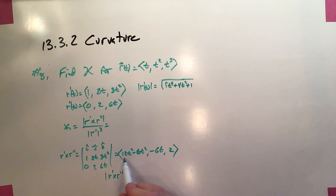Again, the first term is just 6t squared. So that's going to be 36t to the fourth. This will be plus 36t squared and plus 4. So that will be the magnitude.